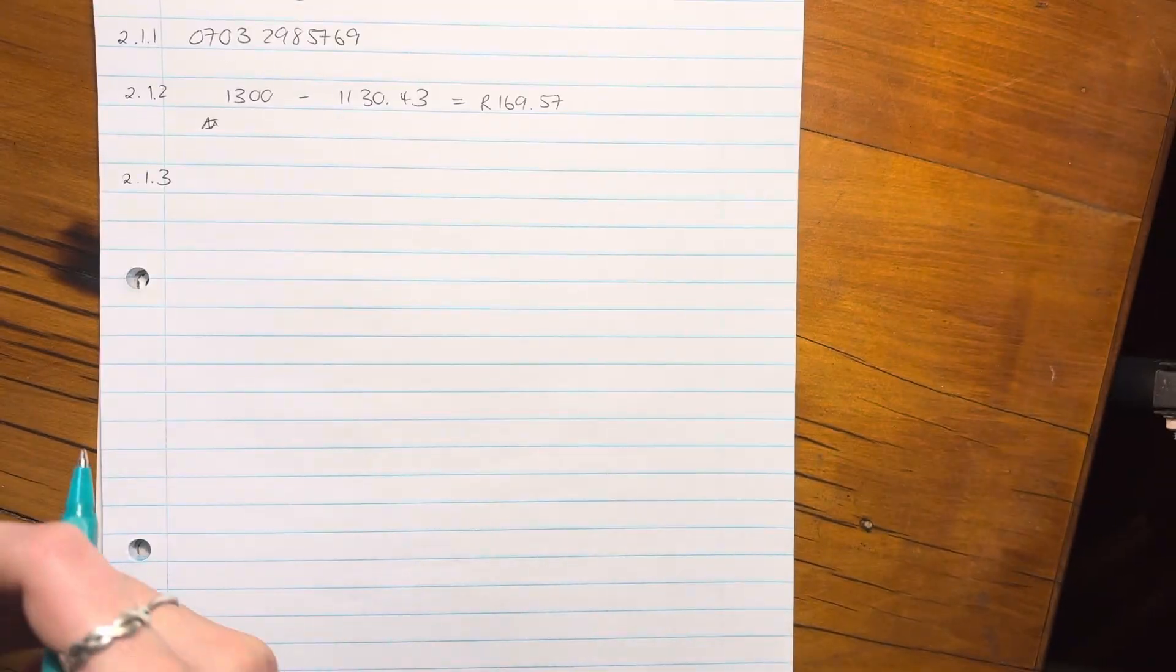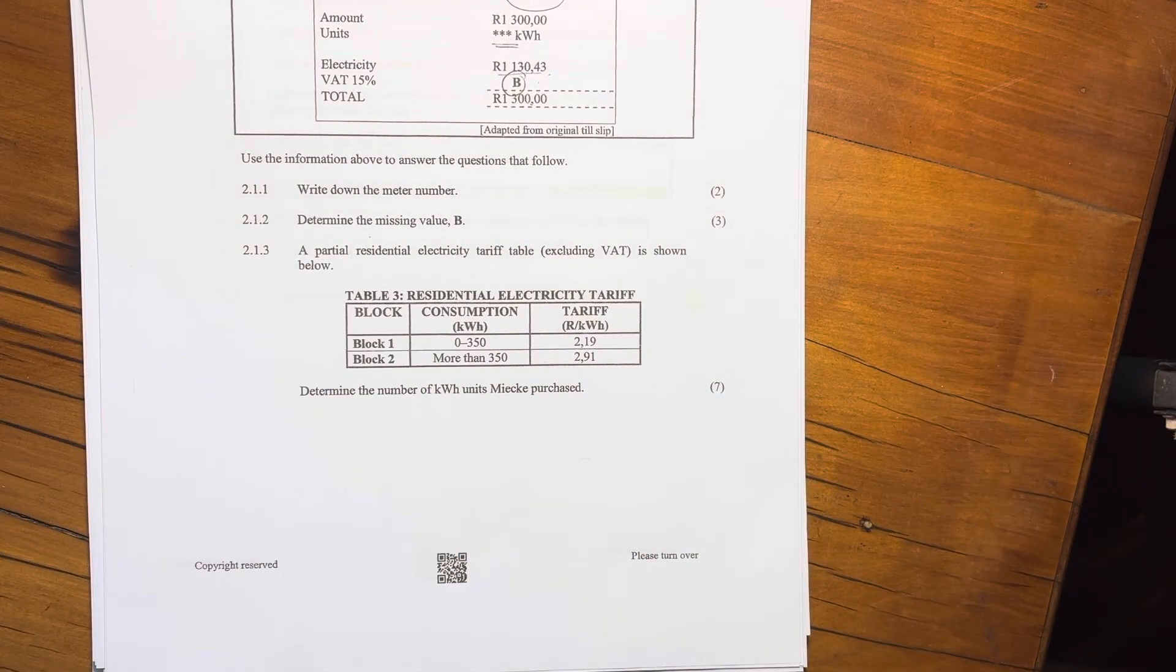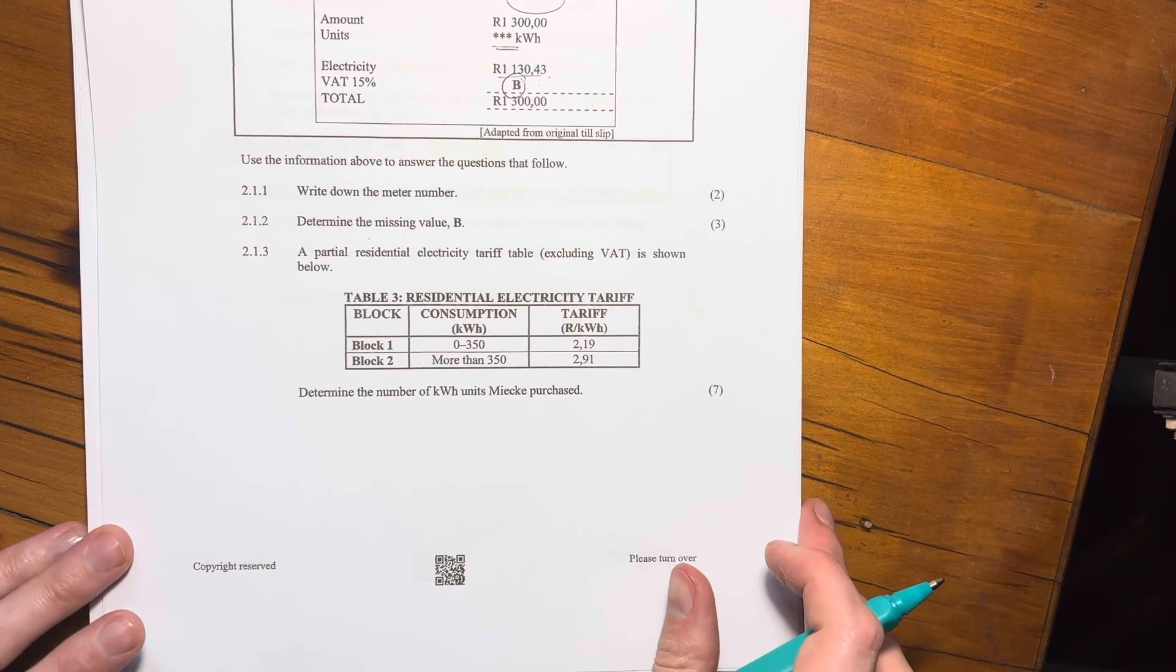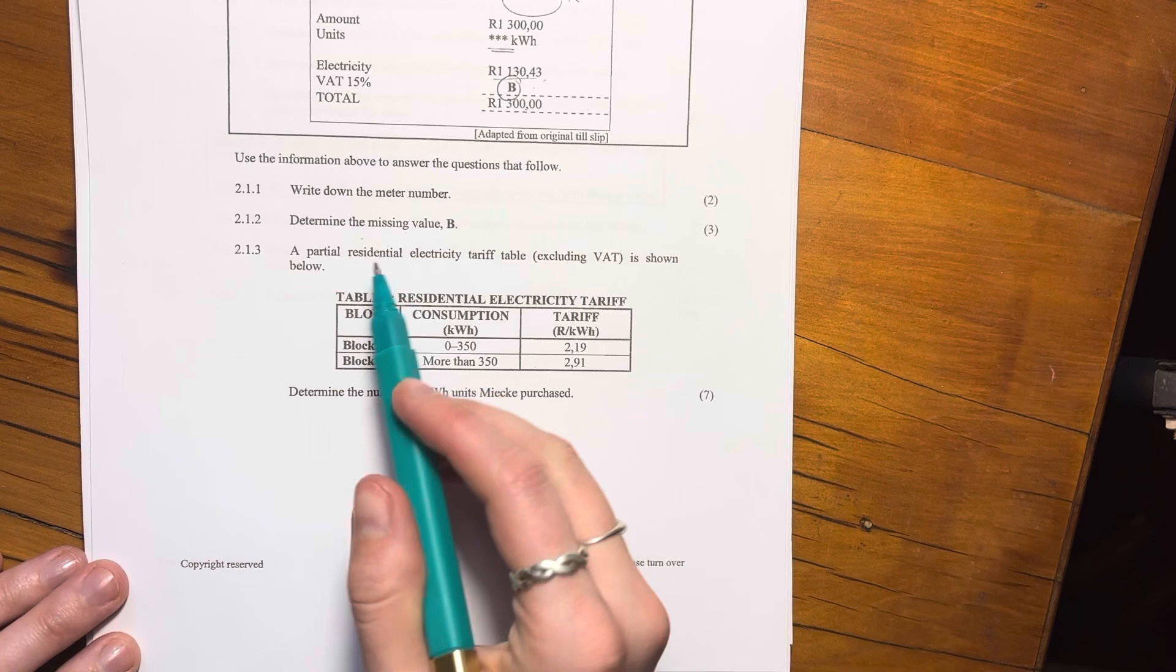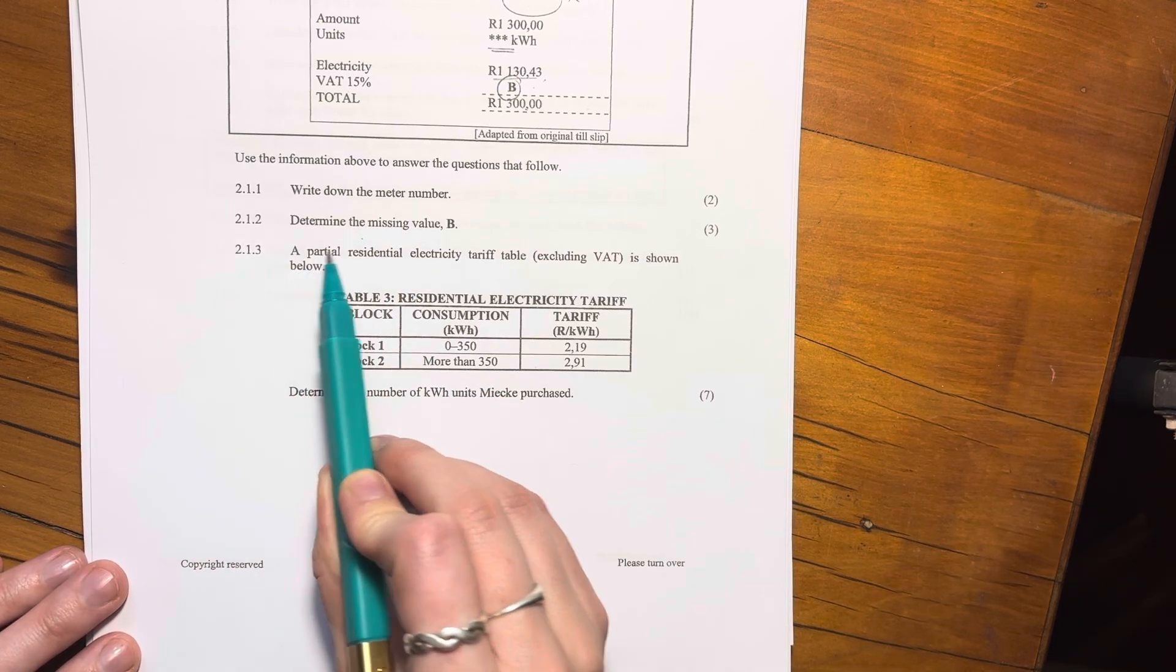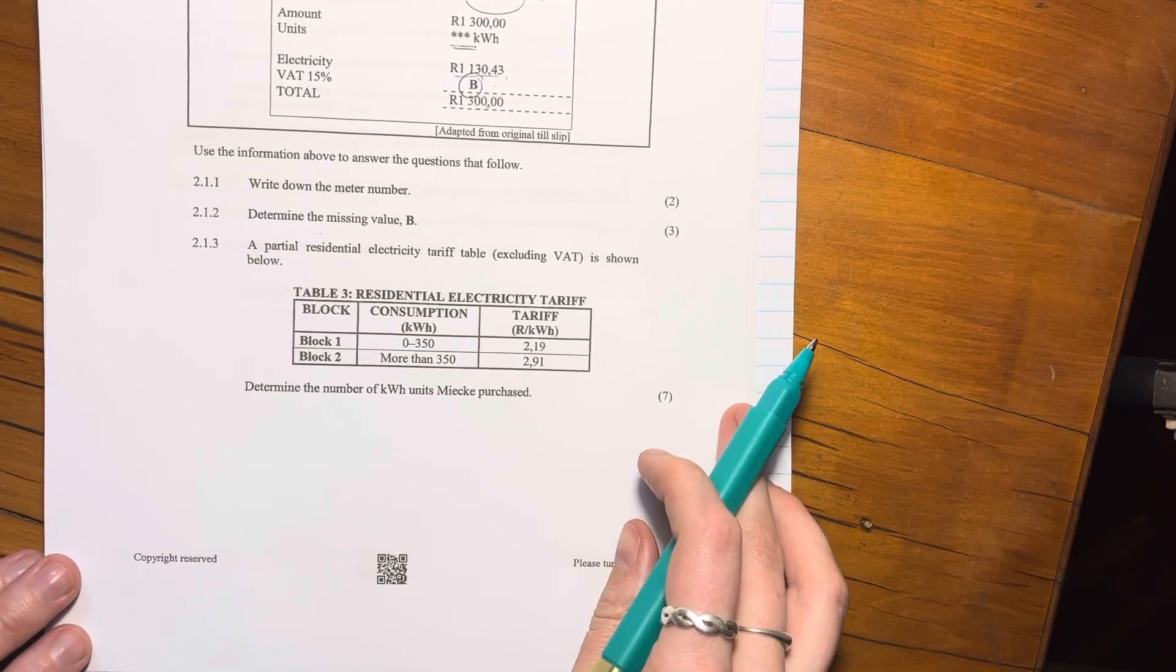Okay, now 2.1.3, as you can see, is a bit of a meaty question. It's a seven mark question. So we're definitely going to have to concentrate a little bit more and work quite methodically because seven marks is quite a lot. But it starts by saying a partial residential electricity tariff table is shown below.